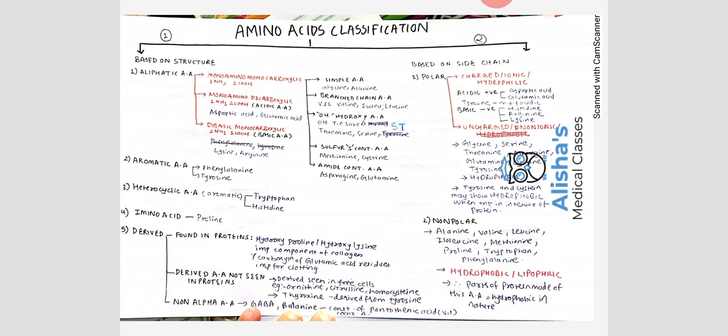Simple amino acids are glycine and alanine — the simplest of all amino acids. For branching amino acids, the trick to remember is 'VIL' — valine, isoleucine, and leucine. For hydroxy amino acids, which have a hydroxyl (OH) group, remember 'OST' — serine and threonine. Sulfur-containing amino acids are methionine and cysteine.